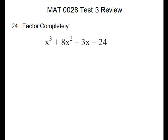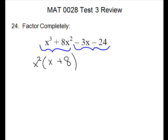Problem 24, we'll factor completely. This one also is a problem with 4 terms, so we will try the grouping. We'll make a group here, and in the second group we're going to include that negative sign. In our first group we look for a GCF — there's no number, but we can take a variable. We can take an x squared. To get back to that group, we're missing an x for the x cubed and a plus 8 for the second term.